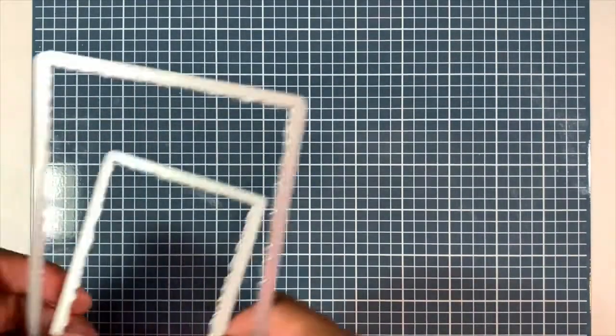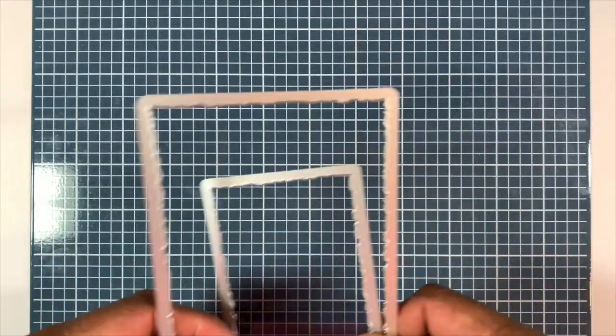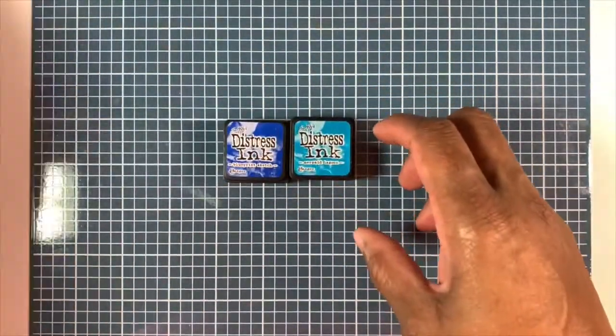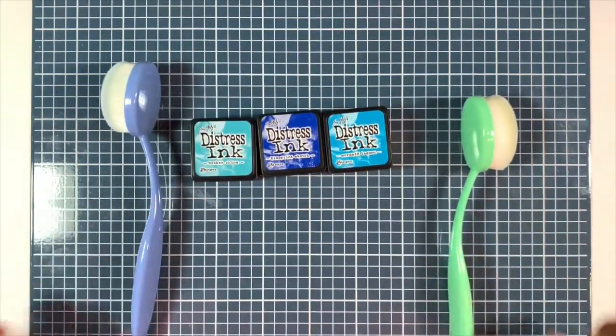My card is an A2 size card. That's my card base: 110 pound Neenah solar white cardstock. Sorry I'm out of breath, I just ran up from my laundry room. I'm trying to keep on top of that. Anyway, I have quite a few projects.